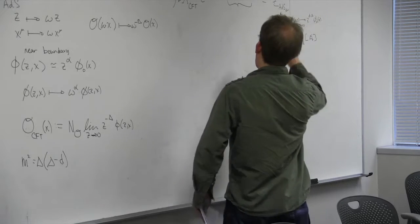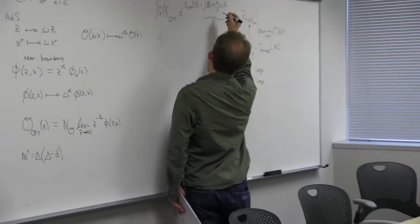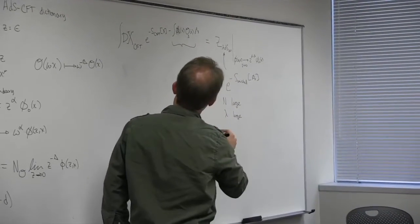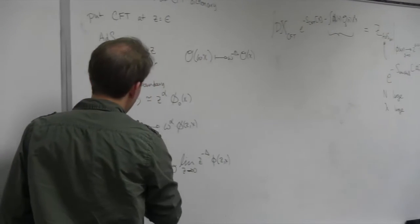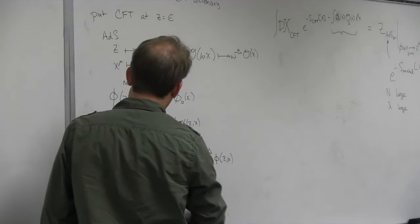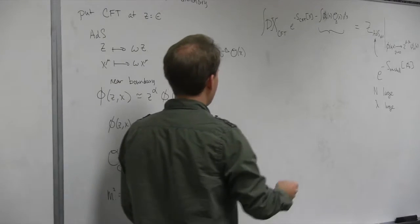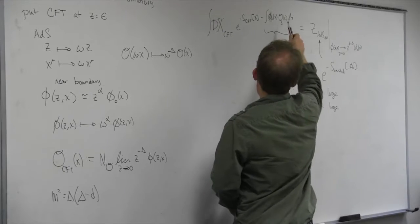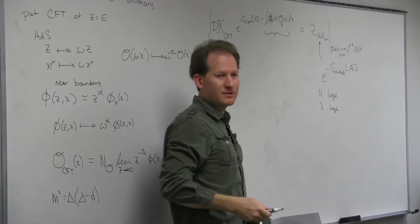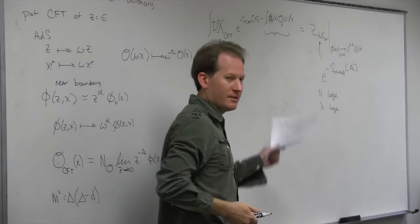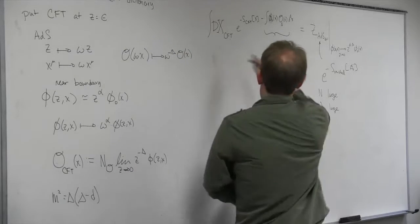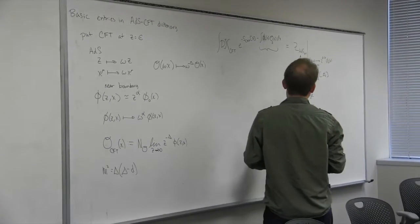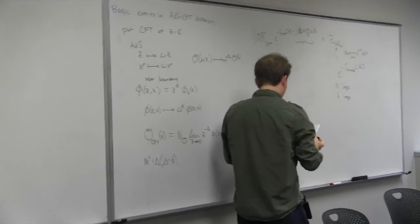After my lecture yesterday, there was a comment that this notation is a little confusing. When I talk about these operators in the CFT, you should think of them as being some composites made out of whatever I'm integrating in the path integral. So this might be like a trace of X's, for example. That's how the dependence on X is in this equation. So let's now go ahead and compute a two-point function.